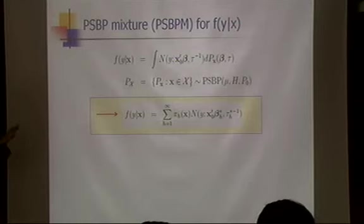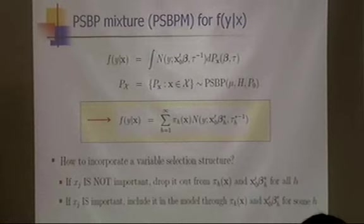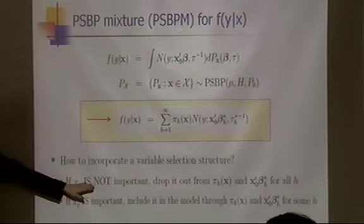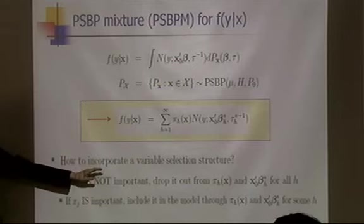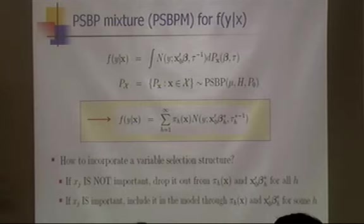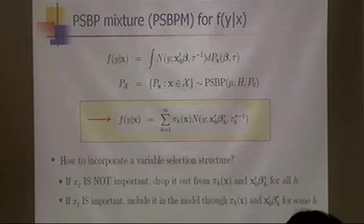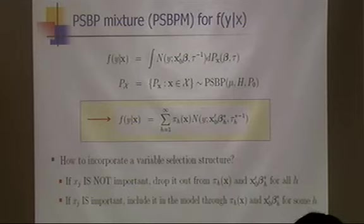We've addressed the first goal of flexible estimation. For the second goal — variable selection — the basic idea is: if a predictor is not important, drop it from both the mixture weight and the conditional mean. Mathematically, excluding a predictor from the model means setting its regression coefficient to exactly zero.